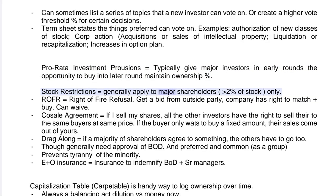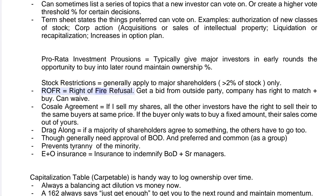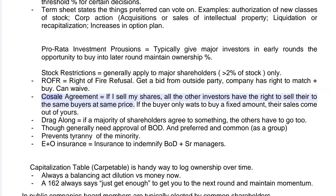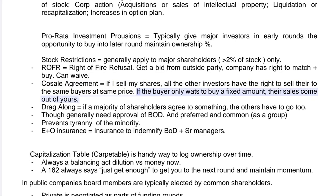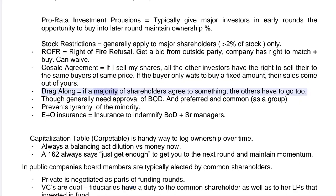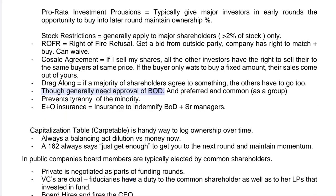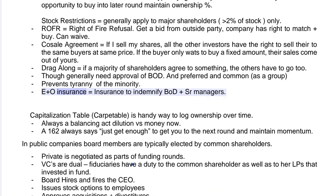Stock restrictions generally apply only to major shareholders — those holding more than 2% of stock. Right of first refusal (ROFR): if you get a bid from an outside party, the company has the right to match it, though this can be waived. Co-sale agreement: if a shareholder sells their shares, all other investors have the right to sell theirs to the same buyer at the same price. Drag-along: if a majority of shareholders agree to something, the others must go along too, though it generally requires BOD approval, and approval of preferred and common as a group, preventing tyranny of the minority.